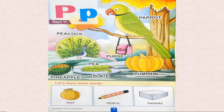P, purr — plate. P, purr — pumpkin. P, purr — pot. P, purr — pencil. P, purr — papers.